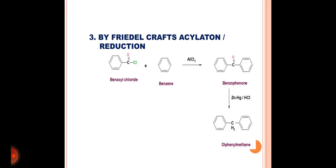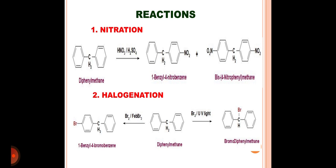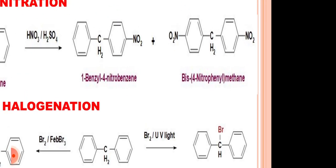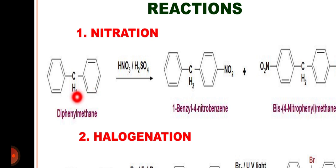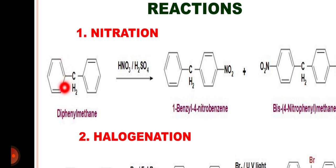Now let's go for the reactions of diphenylmethane. The first example is the nitration reaction. Here we can see that with the aromatic rings, the methylene group is attached. If we consider one of these aromatic rings, we may say that the benzyl group is attached on the benzene ring, and being an alkyl group, this is an electron-releasing group. So this group directs electrophilic substitution on the benzene ring at either the ortho or the para position.